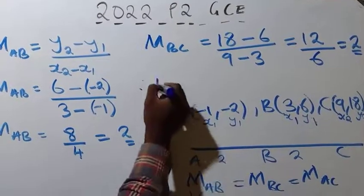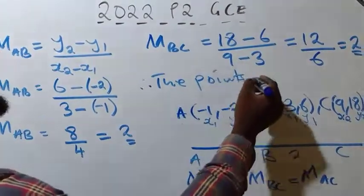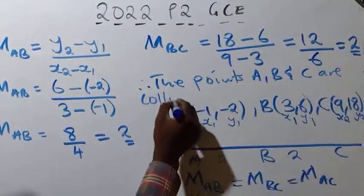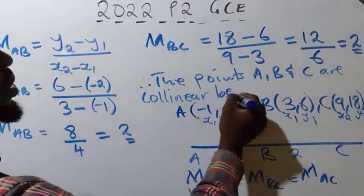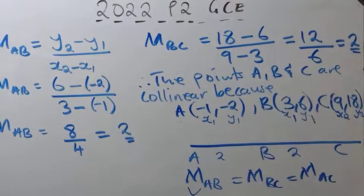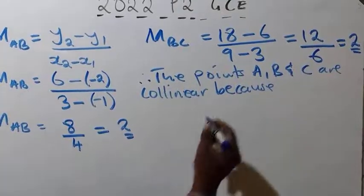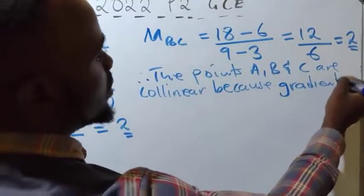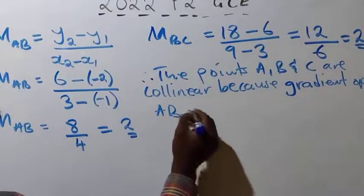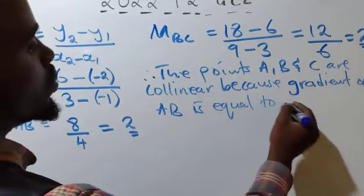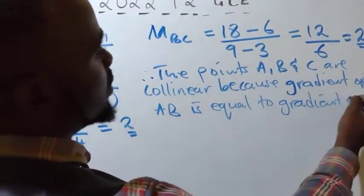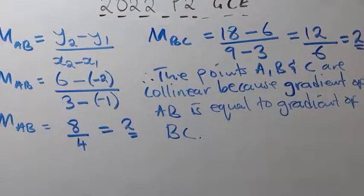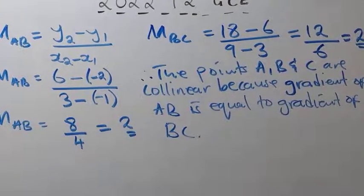Therefore, the points A, B, and C are collinear because the gradient of AB is equal to the gradient of BC. From these workings you will be given the five marks.